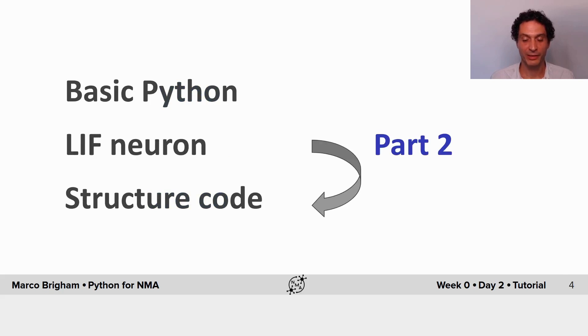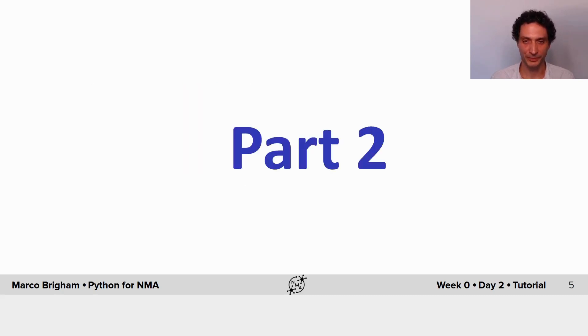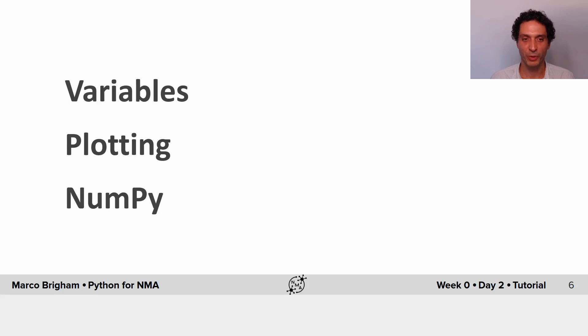In this part we'll continue with the LIF neuron model that we introduced in part one and then we will learn to structure code. So in part two we will learn about other types of variables, other types of plots and a little more in-depth about NumPy.